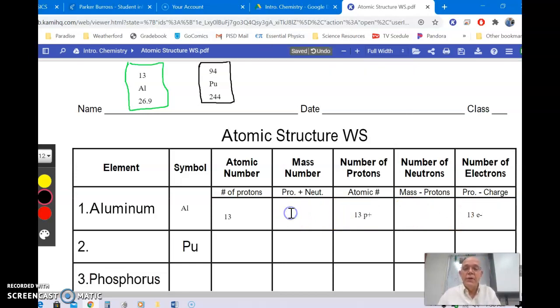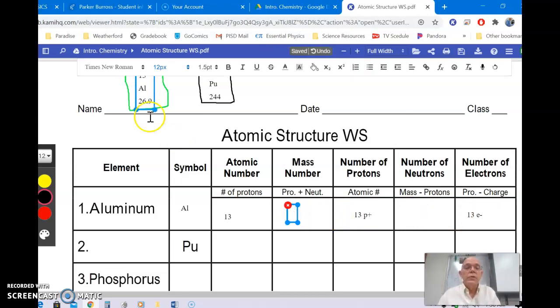Now, for the mass number, we're going to look, this bottom number, 26.9982. Well, obviously, you can't have 0.982 of a proton or neutron, so this is actually the average mass. Some atoms have more neutrons than others.